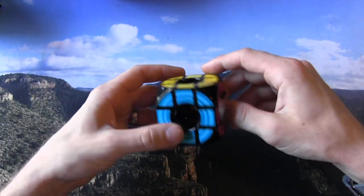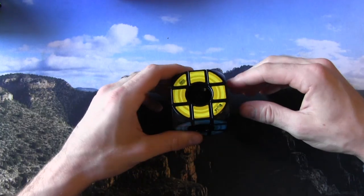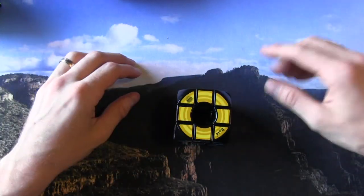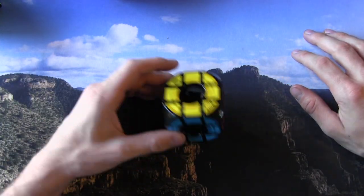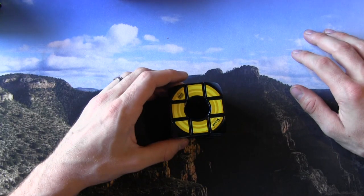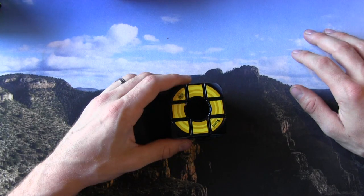So that is how you solve a void cube, just like a 3x3, but with that one parity algorithm. Thank you for watching, leave your thoughts and questions in the comment section below, hit like and subscribe for more content like this in the future, and as always stop by speedcubereview.com for more news and reviews.